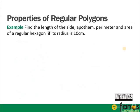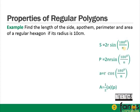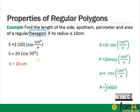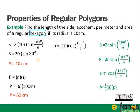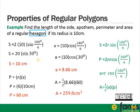Example: find the side length, apothem, perimeter, and area of a regular hexagon with radius 10 cm. S = 2 × 10 × sin(180/6) = 20 sin 30° = 10 cm. Perimeter = 6 × 10 = 60 cm. Apothem A = 10 cos(30°) = 8.66 cm. Area = ½ × 8.66 × 60 = 259.8 cm².